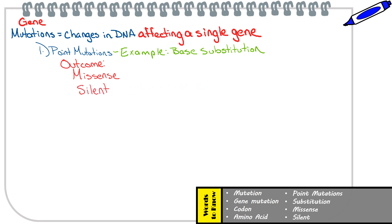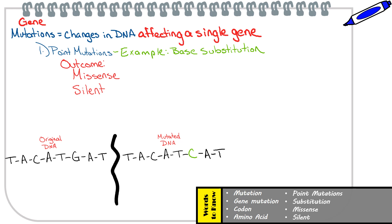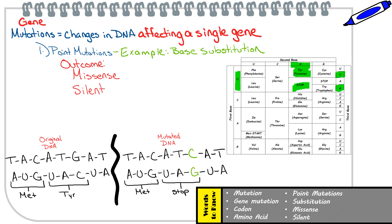However, there are other possible mutation outcomes which may have a major effect on the protein, such as causing a premature termination of the protein's production. In this base substitution, the G is replaced with a C, causing the mRNA codon to change from tyrosine to stop. This stop codon basically signals the cell to stop producing the protein, which is usually seen at the end of the mRNA codon sequence. But in this case, this stop codon appears before the mRNA sequence is complete. This type of mutation outcome will cause the amino acid sequence to be incomplete, which is why we refer to this mutation outcome as a nonsense mutation.